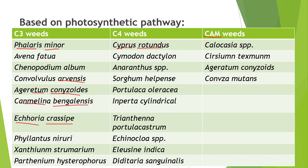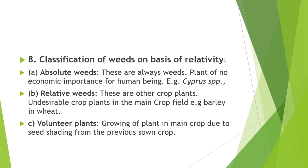Examples of C4 weeds are Cyperus rotundus, Cynodon dactylon, Amaranthus species, Sorghum halepense, Portulaca oleracea, Imperata cylindrica, Echinochloa species, and Eleusine indica. Examples of CAM weeds are Conyza, Ageratum conyzoides, Cirsium texanum, and Coleocephalus species.